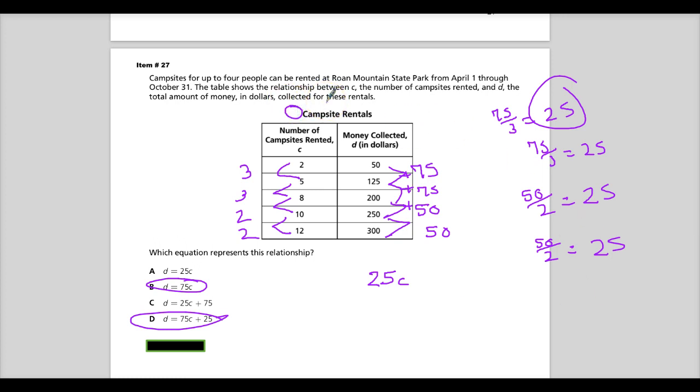In the real world, you wouldn't make any money. And in the math world, you wouldn't make any money either. Because the number of, you'd only earn $50.